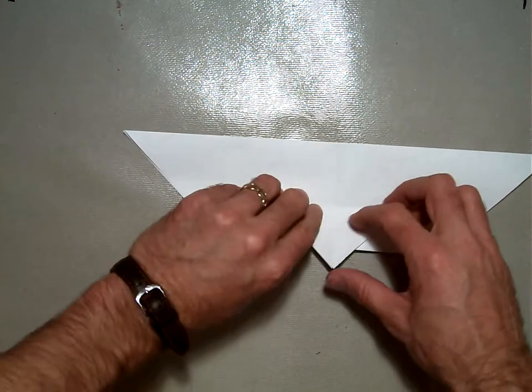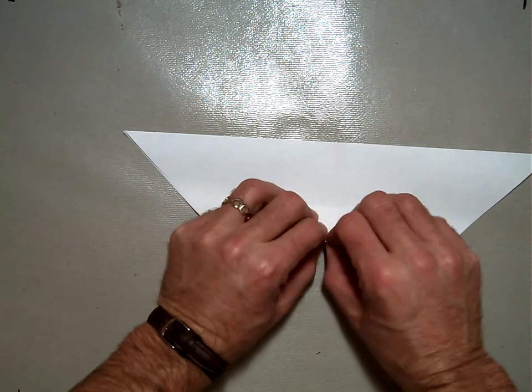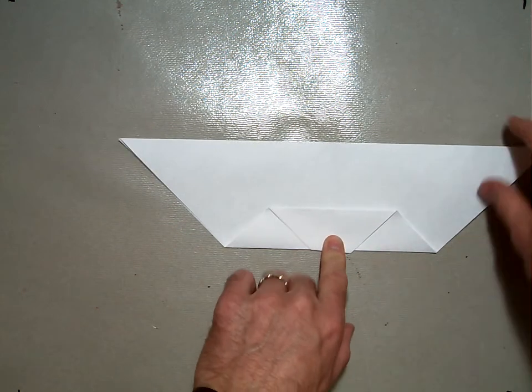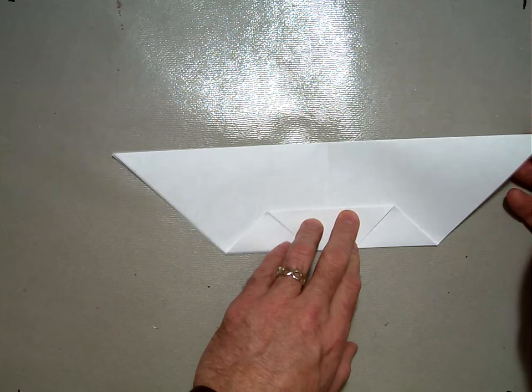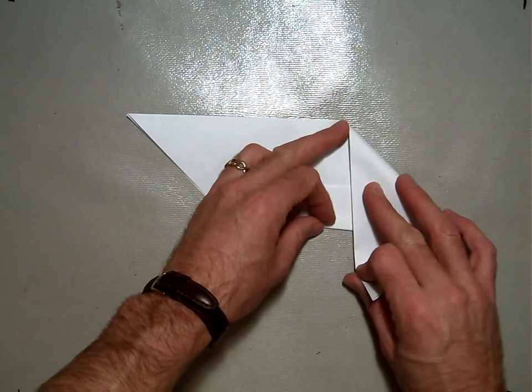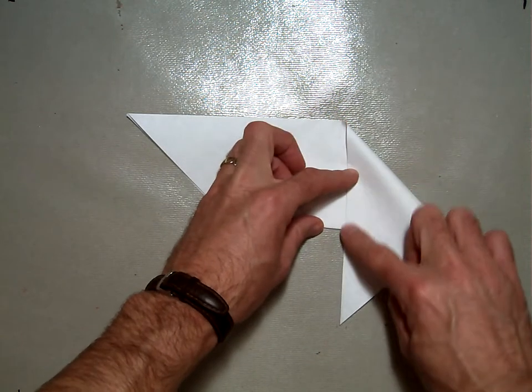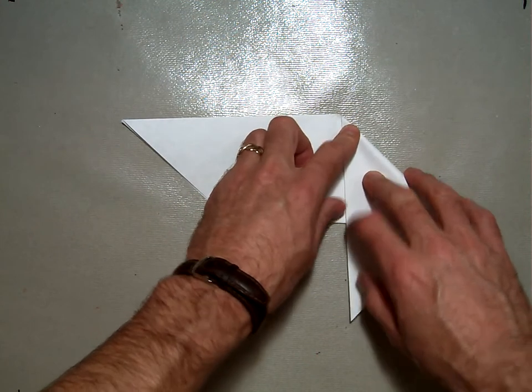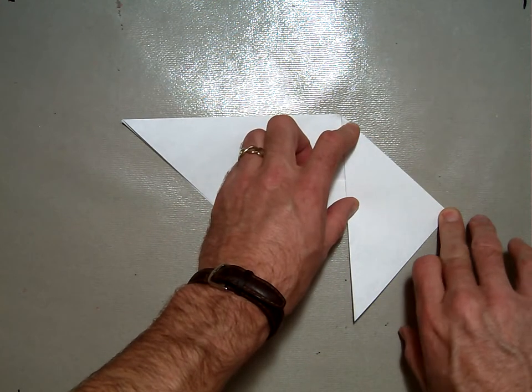Then you're going to tuck this little corner right back underneath like that. And then you're going to take this corner here and you're going to fold it down so that this line goes straight down the edge like so.